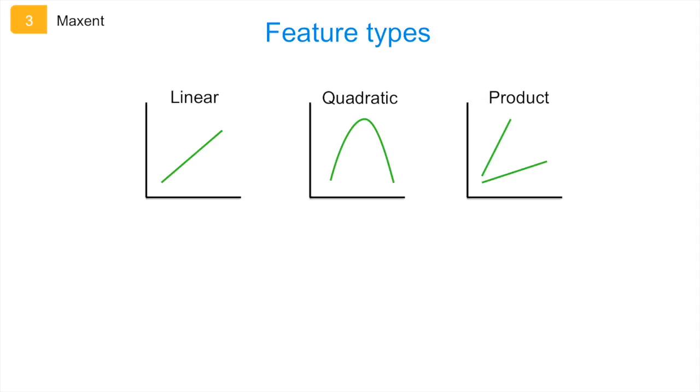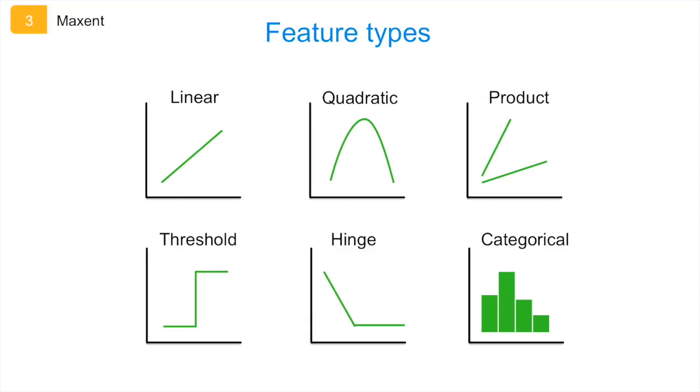And then there is the threshold feature type, which converts a continuous response in a binary response. The hinge feature type is a combination of the linear and the threshold type. And the last feature type is categorical, which refers to categorical variables with different classes of the response. As a default, Maxent uses all feature types, but you can choose to build simpler models by only using a few of these.